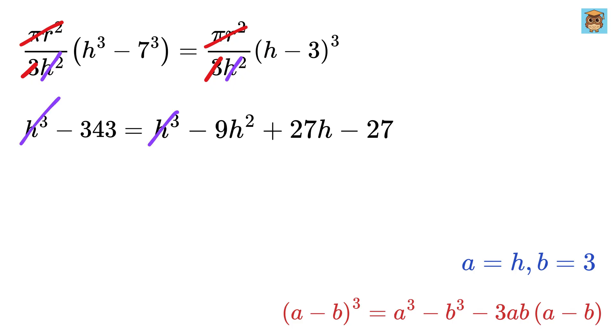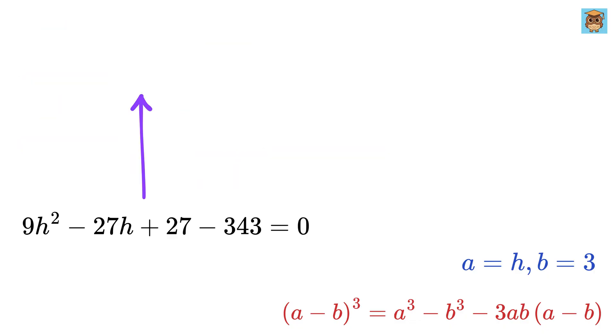Oh look! The H cubes cancel out. Now, bring all the terms to the left-hand side. We get 9H square minus 27H plus 27 minus 343 equals 0. Hence, the final equation is 9H squared minus 27H minus 316 equals 0.